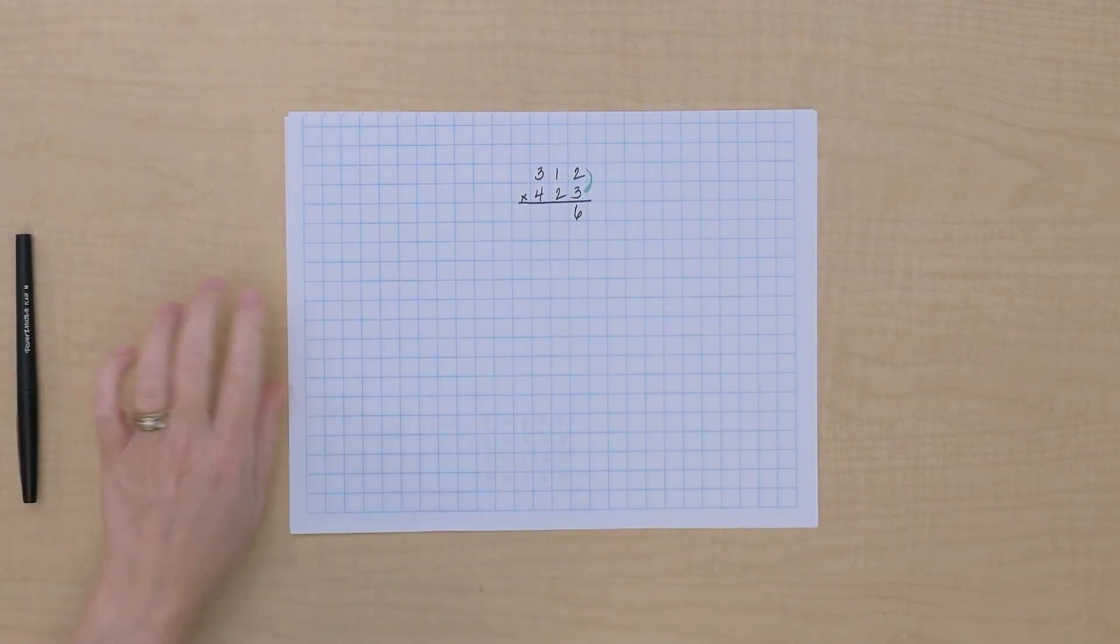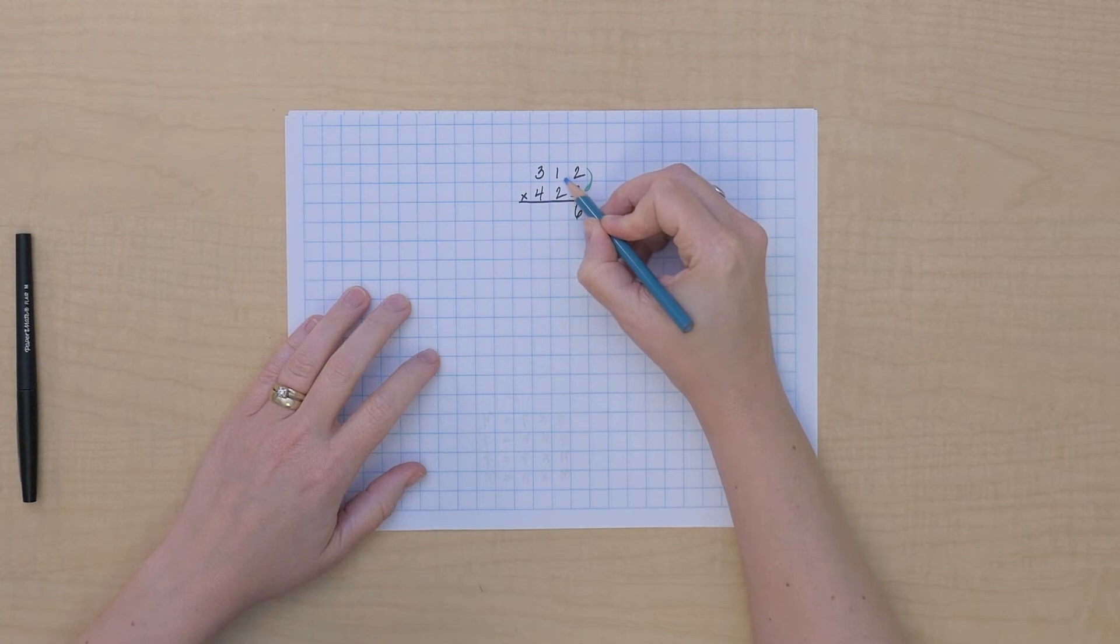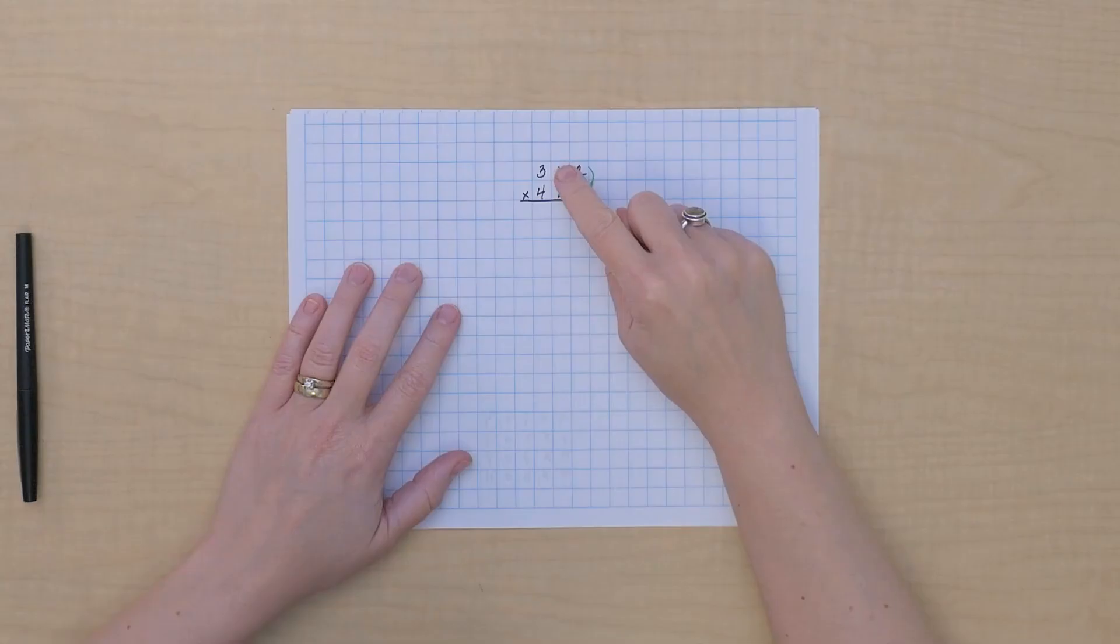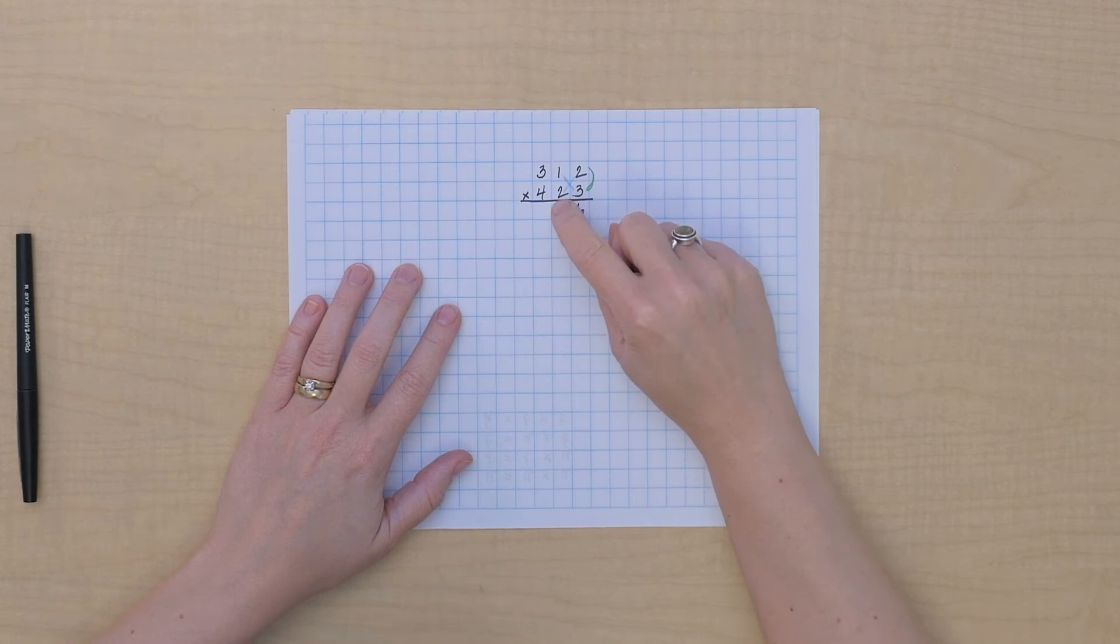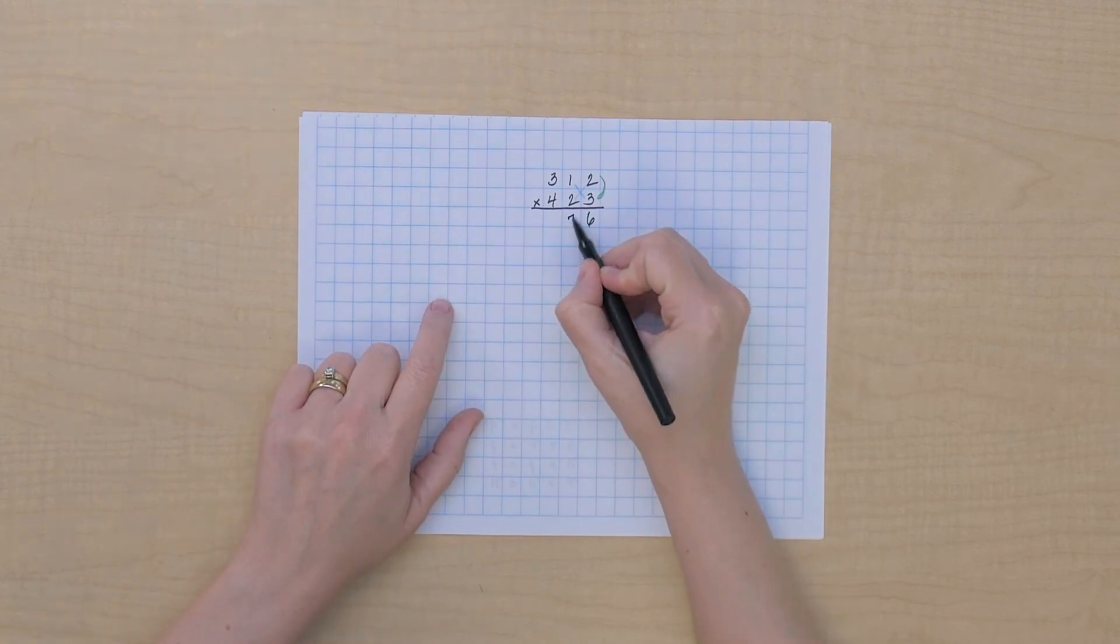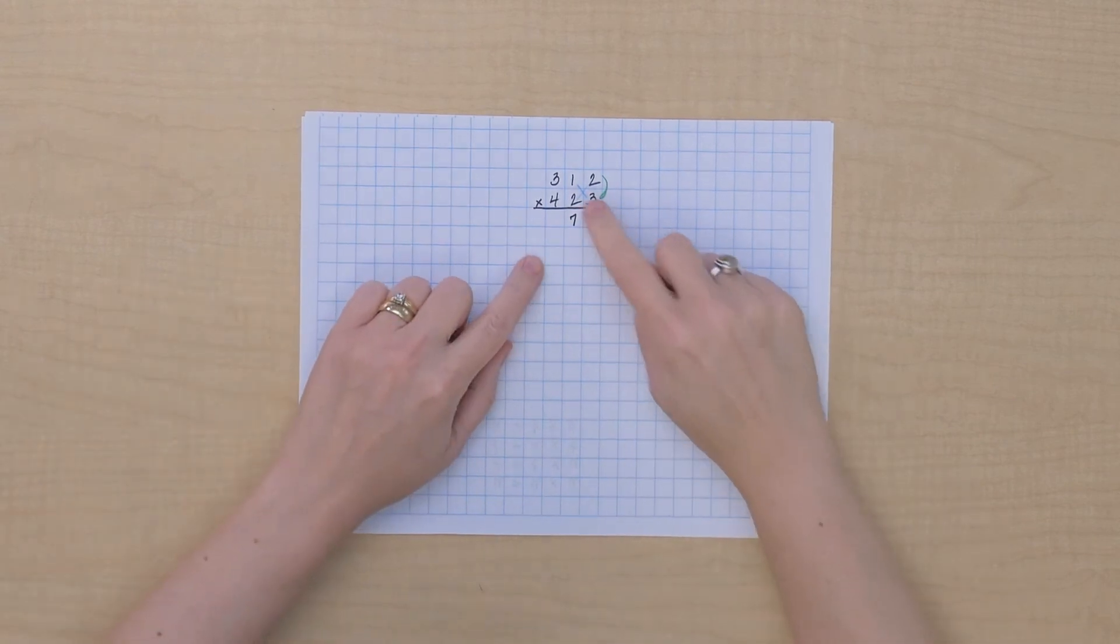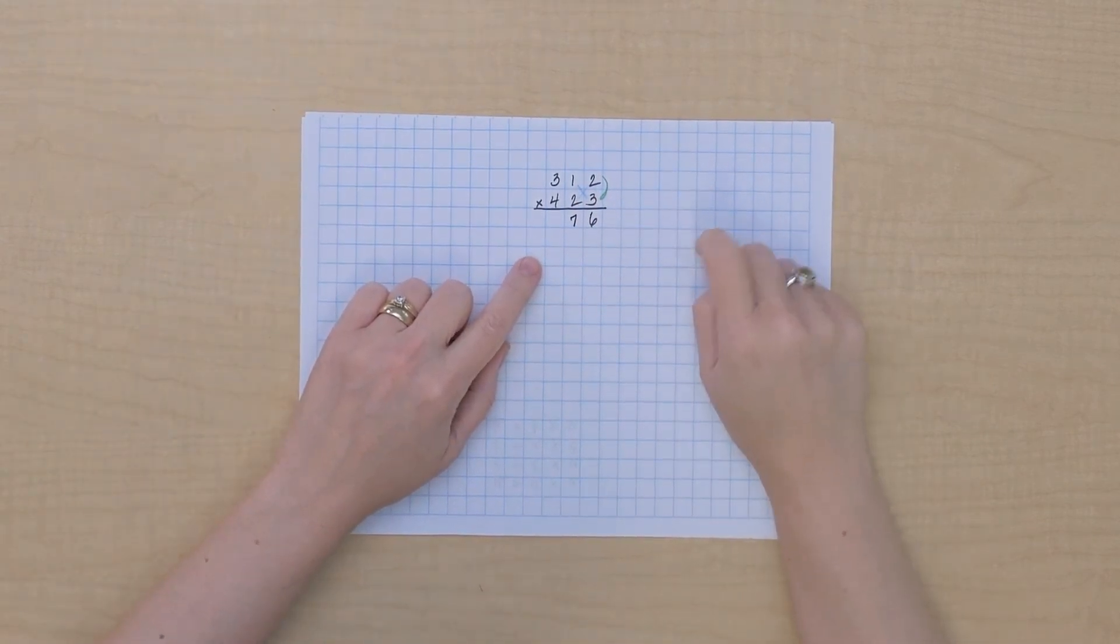But we've got a couple of ways to get our tens here, right? We have the tens times the units, and we have the units times the tens. So let's see what that is. We've got one ten times three, that gives us three tens, plus two units times two tens, so that's another four tens, so that's seven tens, we can write that one down because we know those are the two ways we get tens.